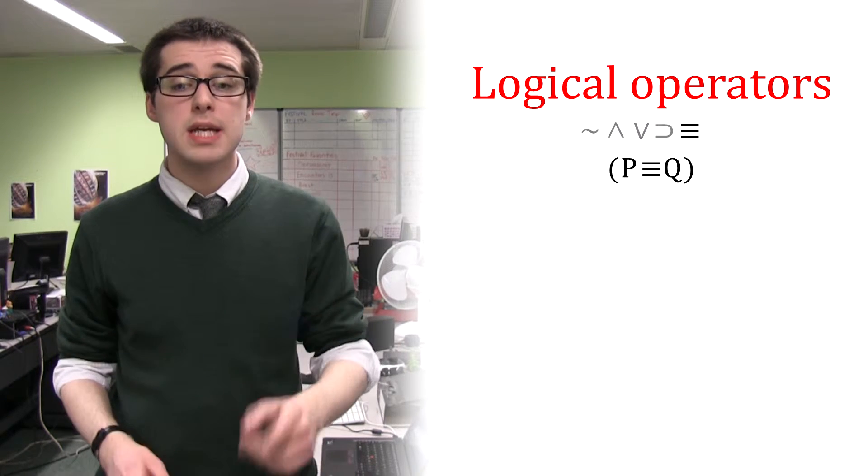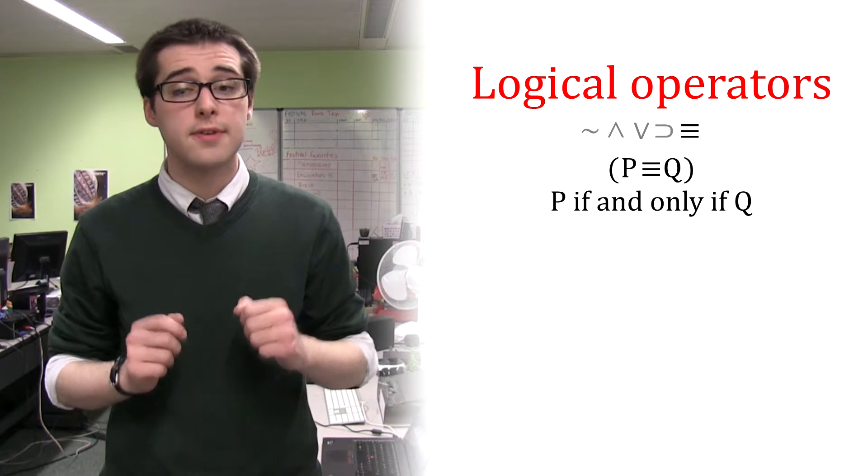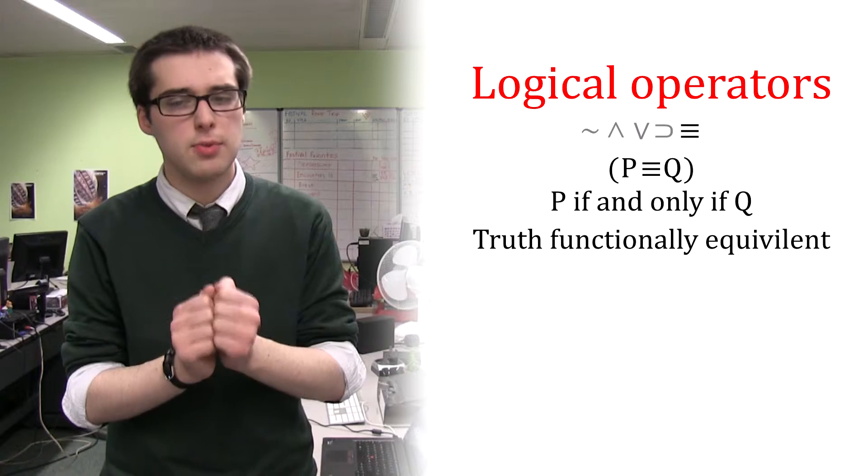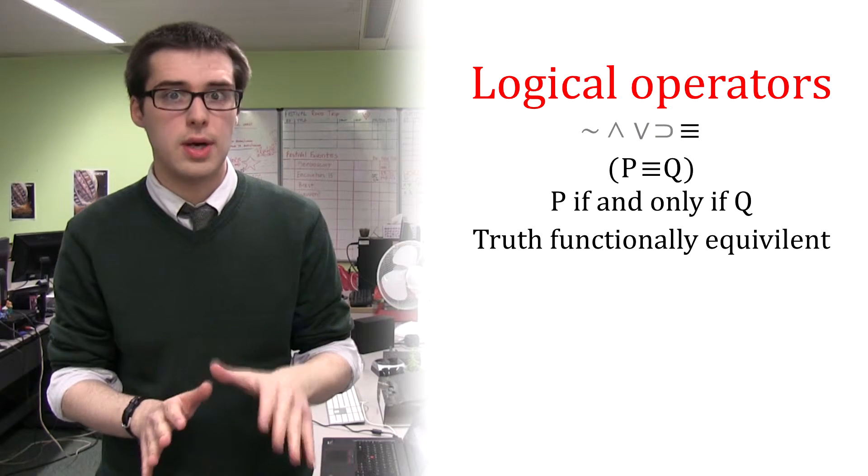If then is represented using the horseshoe symbol. And lastly, this means P if and only if Q, and shows the truth functional equivalency of P with Q, which we'll return to in a later series.